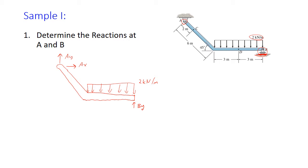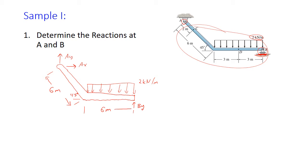The next thing we want to include is our distances. We see that the slanted distance is six meters, oriented at 45 degrees from the horizontal, and the horizontal portion is six meters long. For now we're not interested in point D, so we don't need three meters. Finally, we include a coordinate system: X horizontal, Y vertical, and positive moment is counterclockwise.